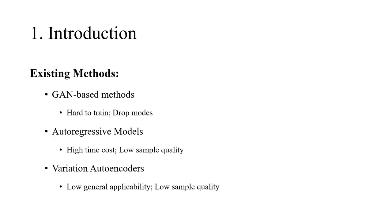Existing methods can mainly be divided into three sub-classes. GAN-based methods are notoriously hard to train and often drop modes. Autoregressive models and variation autoencoders cannot achieve the same sample quality and general applicability as GAN-based methods.